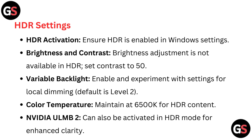Variable backlight: enable and experiment with settings for local dimming. Default is level 2. Color temperature: maintain at 6500 Kelvin for HDR content.